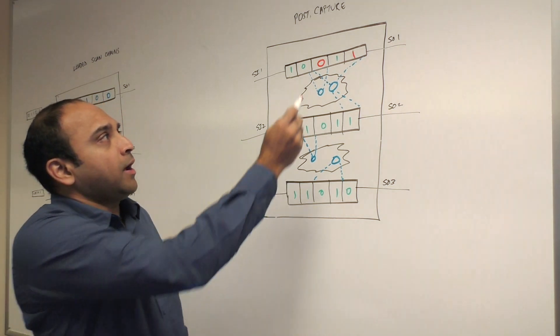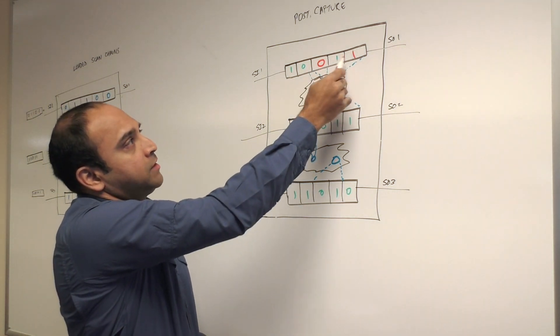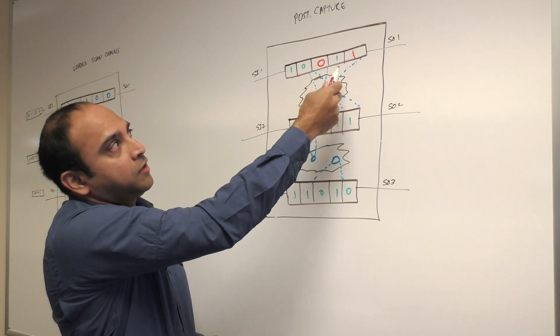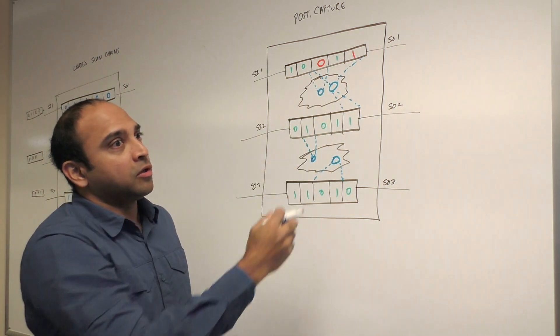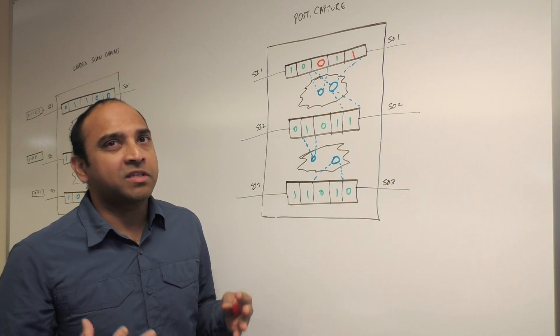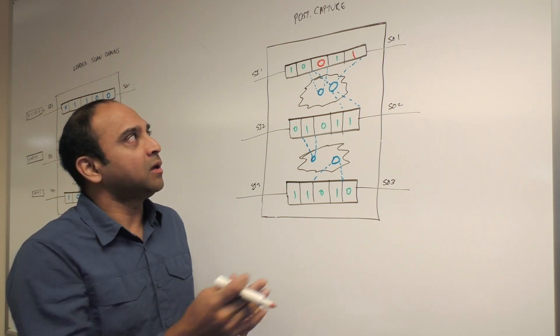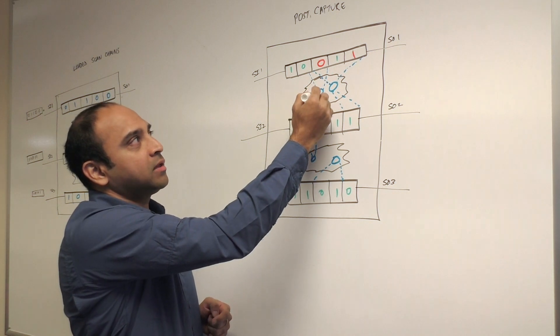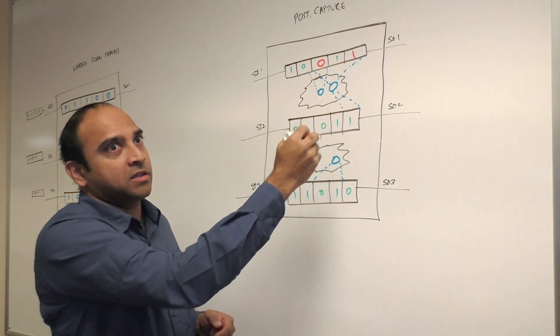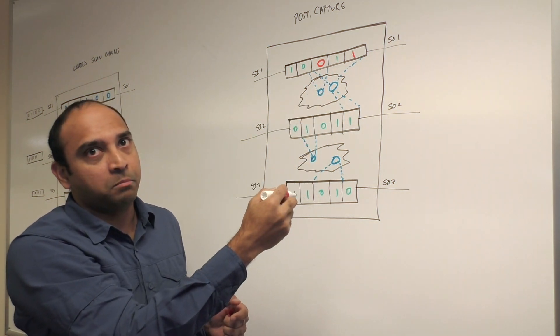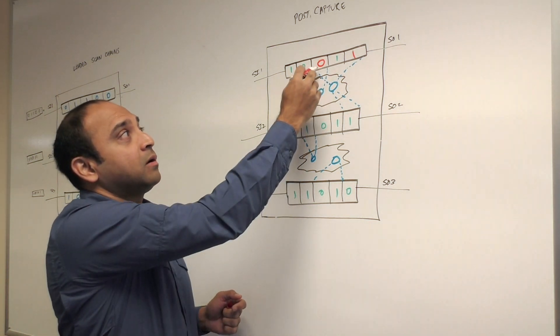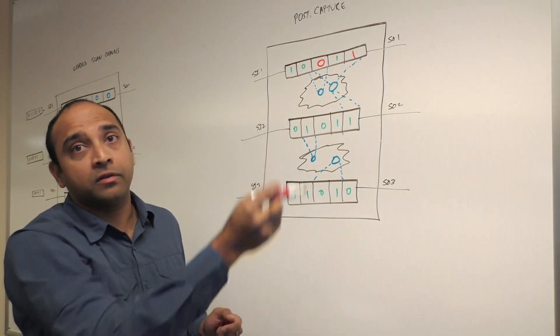Let's say you have this case where you have these bits that have changed. They're different from the expected value. That's where scan diagnosis comes in. Scan diagnosis takes those failing logs, the cycles that have failed, and tries to figure out where in the design, what kind of defect in the design, and where in the design that defect could have been located to actually cause those particular cycles to fail on the tester.